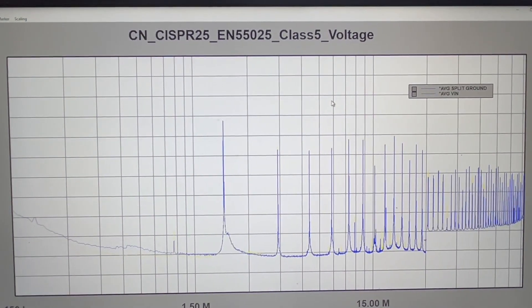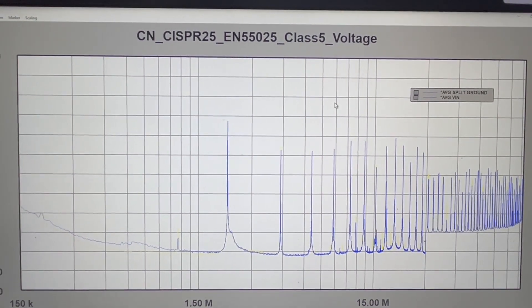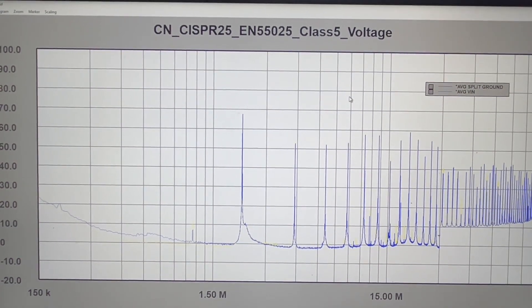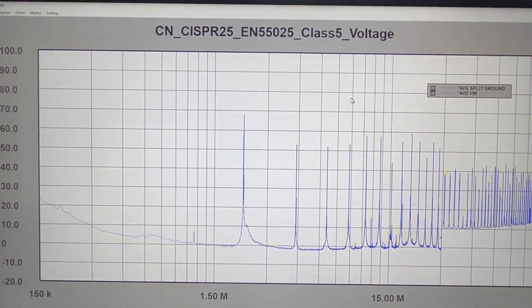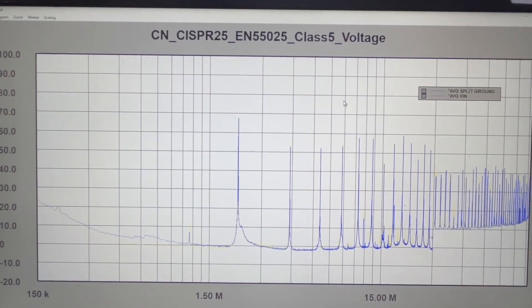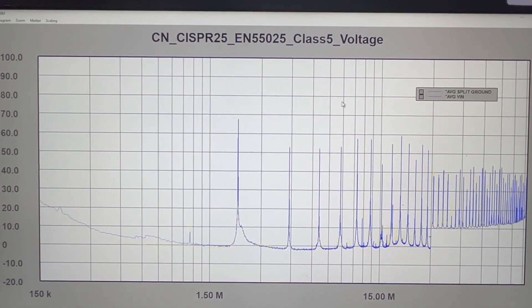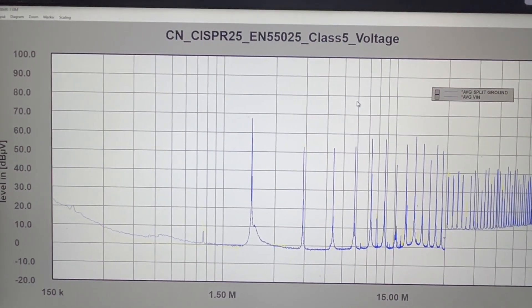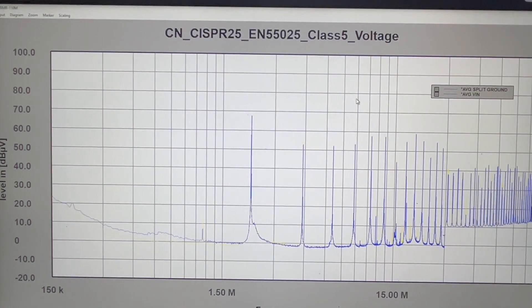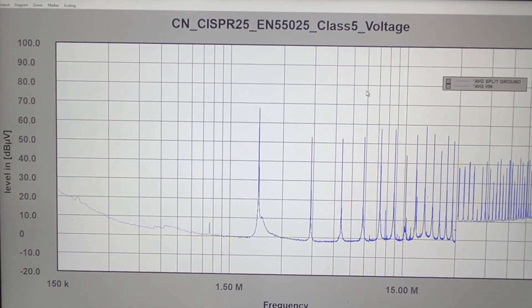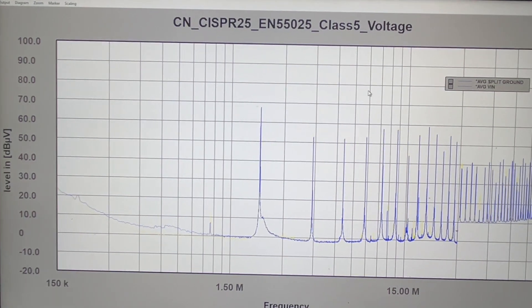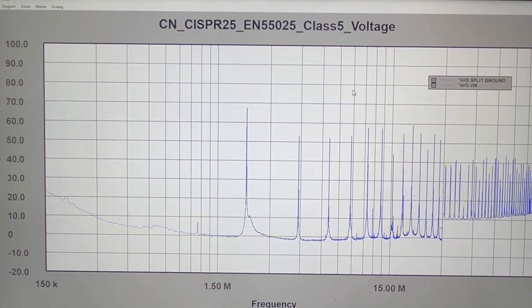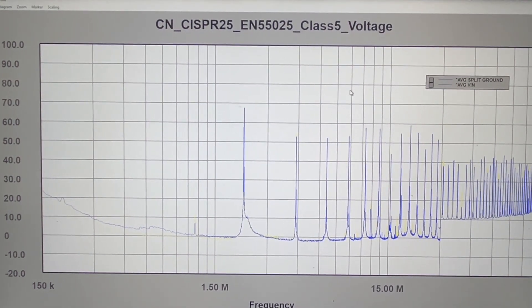Let's have a look at the average. This is the average result between the two configurations. Again, it's the same. As I said, at least this test shows you that from the conducted emission point of view, this split ground actually does not make too much improvement compared with one continuous ground, which makes sense to me because I simply cannot see the benefits of creating this separate ground.